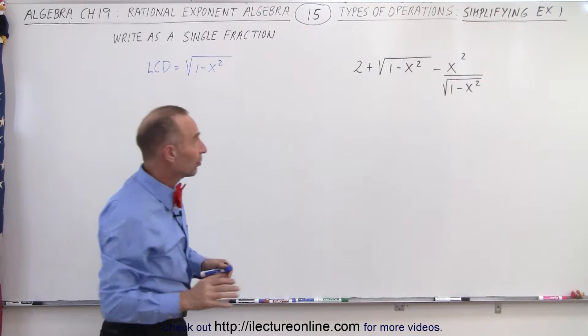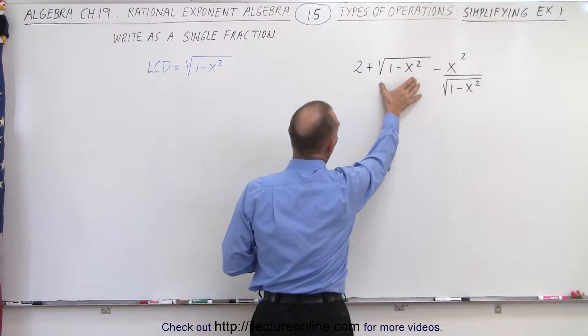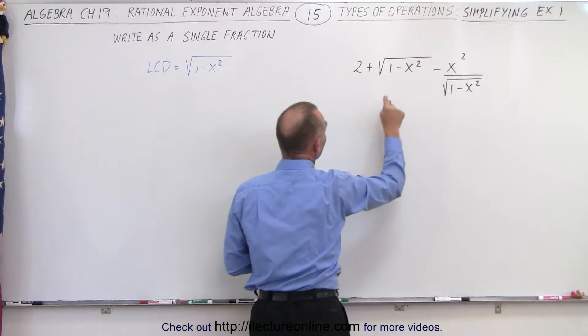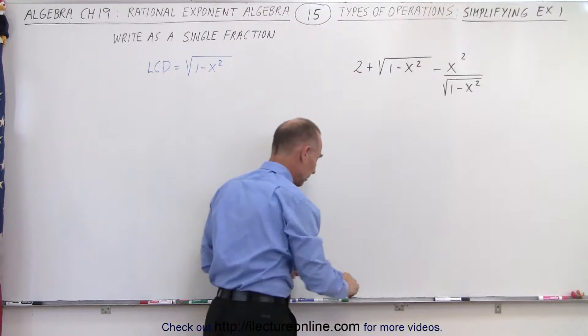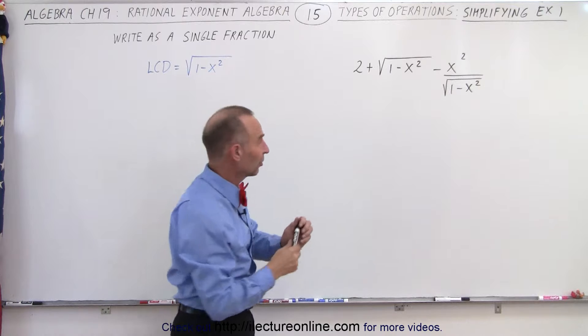What we're going to do is, if there's an expression or a term that does not have that denominator, we're going to multiply both the numerator and the denominator by that denominator. So we're going to spread out the terms a little bit.